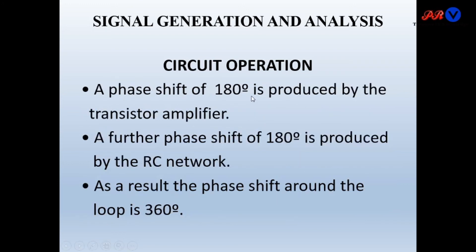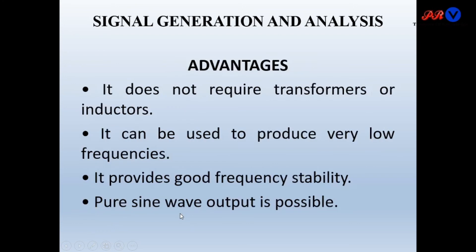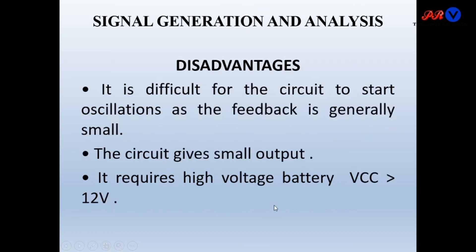Advantages of RC phase shift oscillator: it does not require any transformer or inductor, it can produce very low frequencies, it provides good frequency stability, and pure sine wave output is possible. Disadvantage: it is difficult for the circuit to start oscillations as the feedback is generally small, the circuit gives small output, and it requires a high voltage battery — meaning the transistor voltage must be greater than 12 volts.